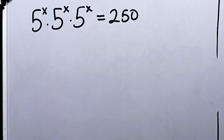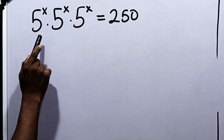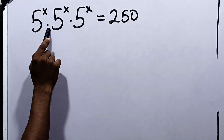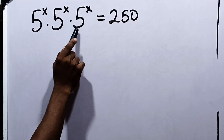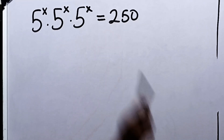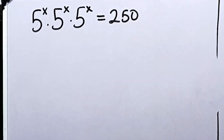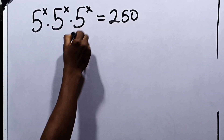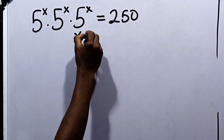Let's solve this together. It says 5 raised to the power x, dot 5 raised to the power x, dot 5 raised to the power x, equals 250. We've got to solve for the values of x in this question.